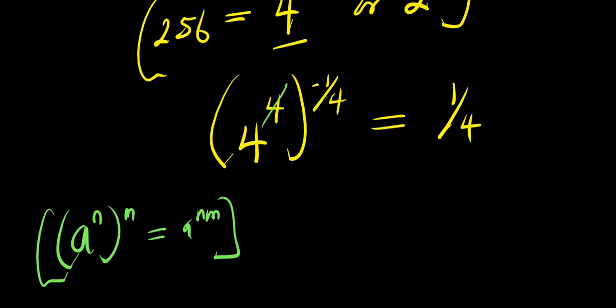So we have this: multiply 4 times negative 1 over 4, the exponents cancel out, and we have 4 power negative 1 equals 1 over 4.